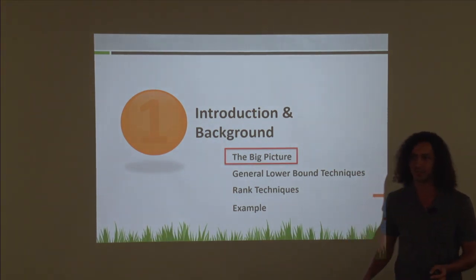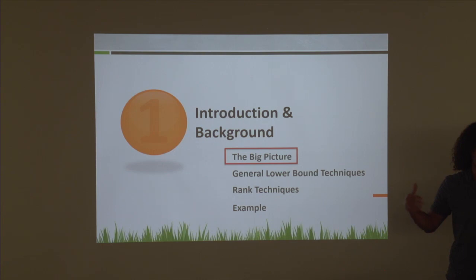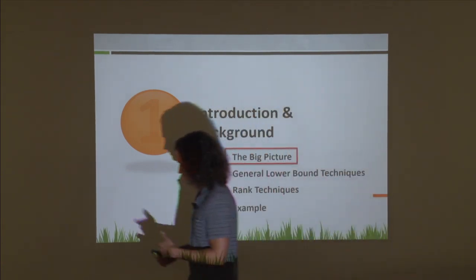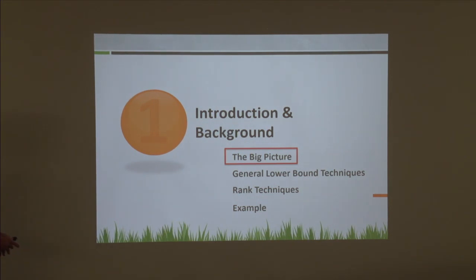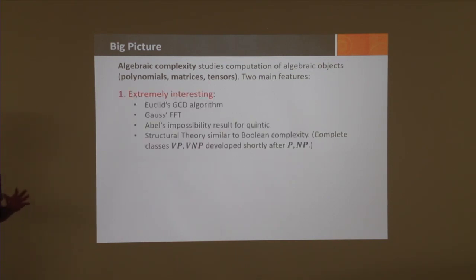Let's start with some introduction and background. I'll first talk about the big picture, and then show how lower bounds are usually proved in arithmetic complexity. Algebraic complexity studies computations of algebraic objects—polynomials, tensors, matrices—and it exhibits two main features. One is extremely interesting and extremely old. Even before computer science, Euclid already gave us the first algebraic algorithm.